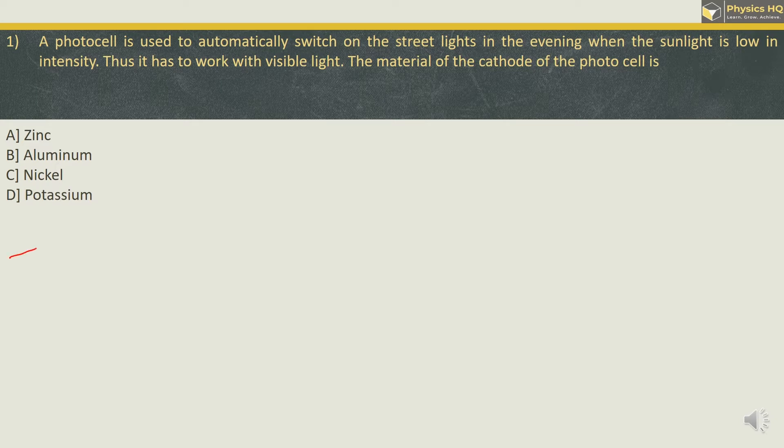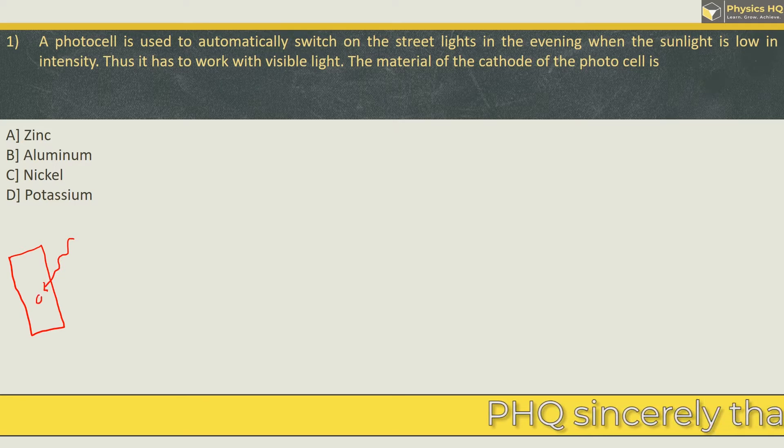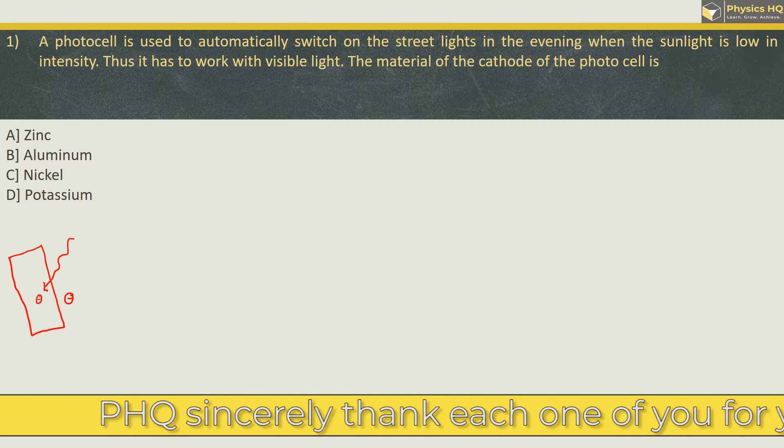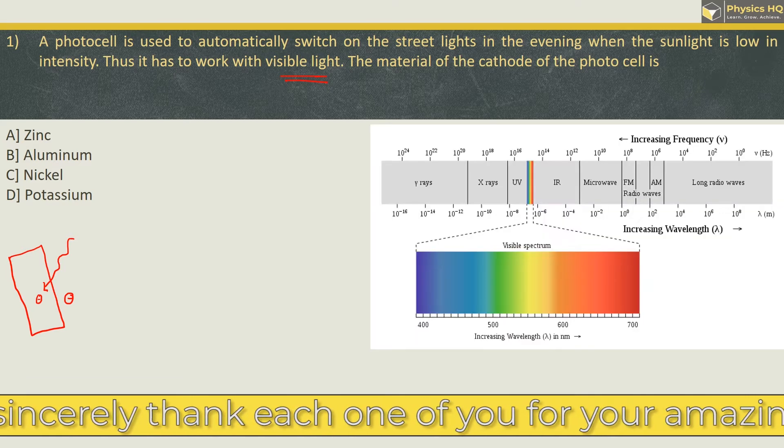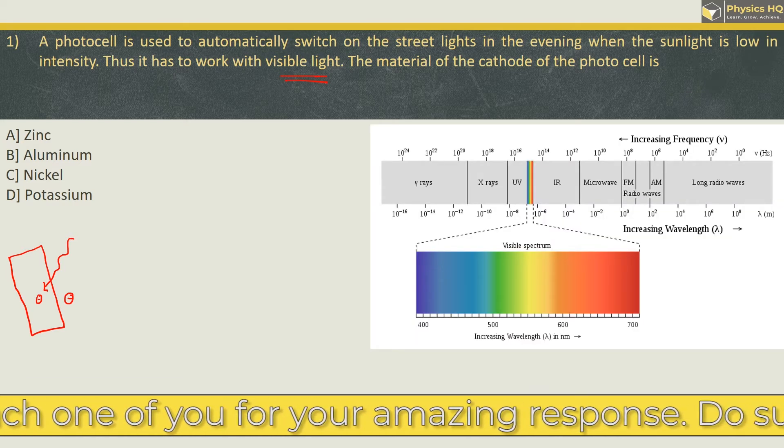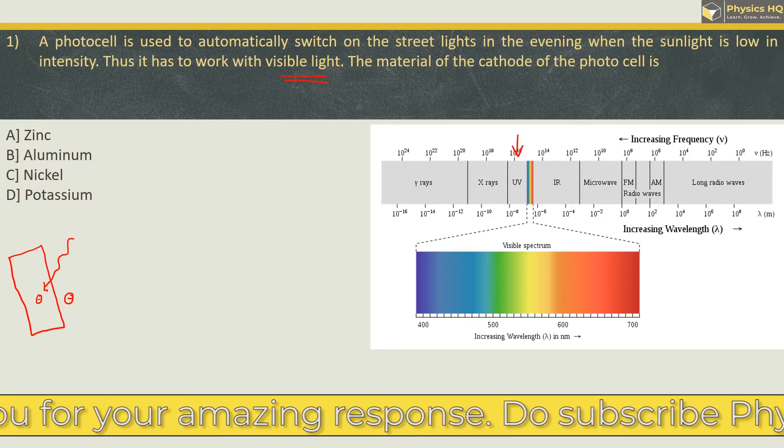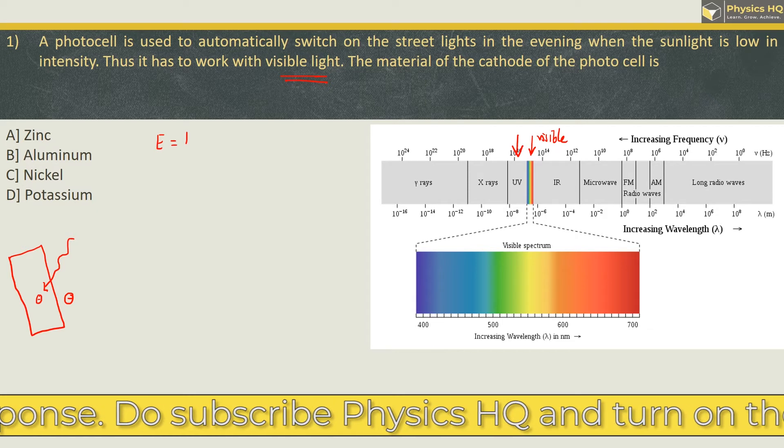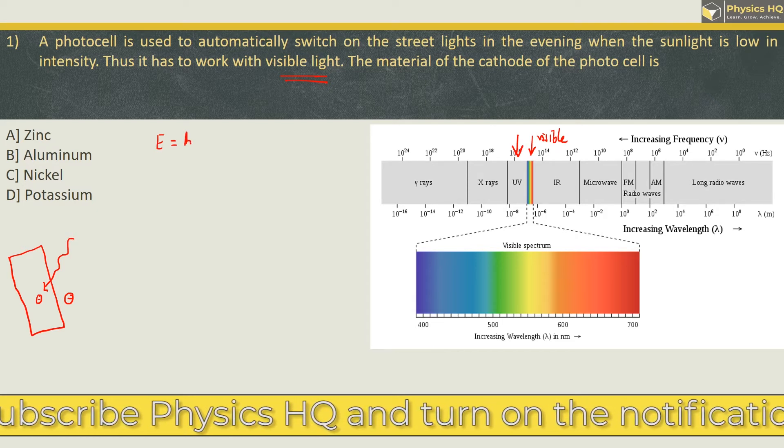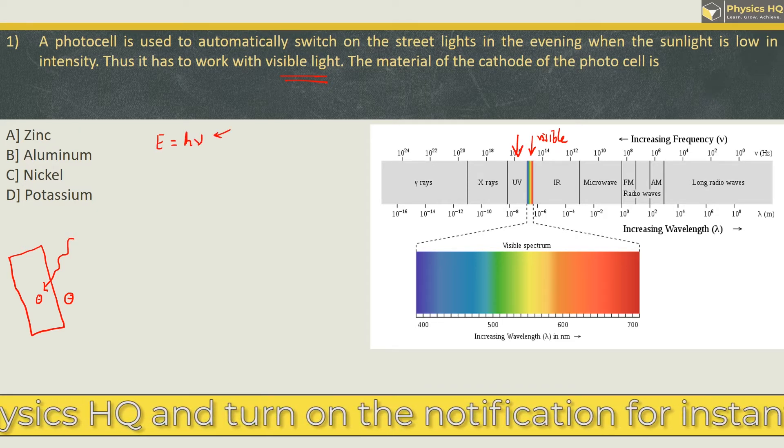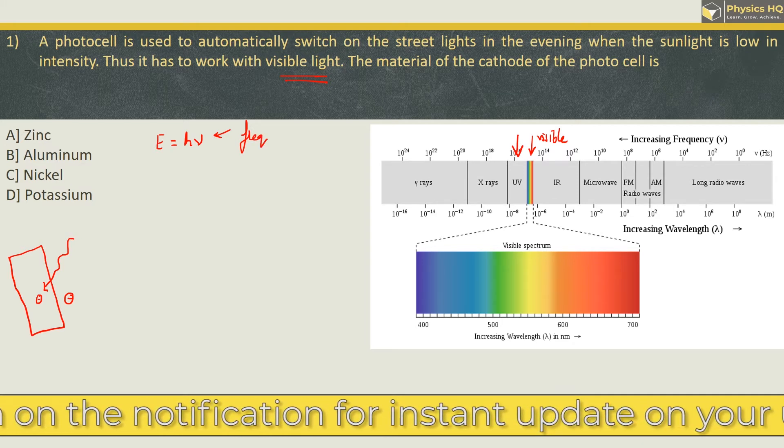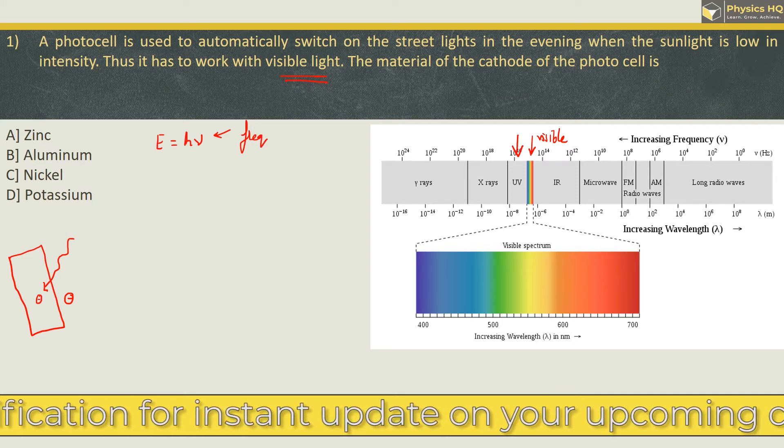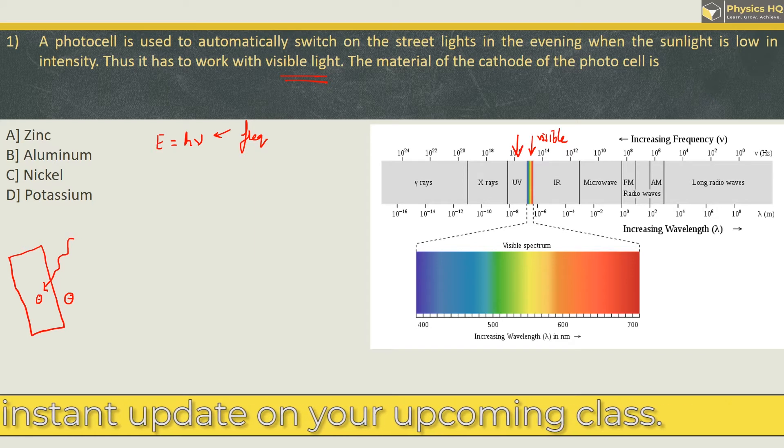Now in the case of photoelectric effect, whenever an ultraviolet ray falls on a metal, the electrons from the surface of the metals are emitted out. But in our case, we are supposed to use visible light. As you can see from this frequency spectrum, the frequency of ultraviolet ray is greater than the frequency of visible light. Energy that is provided by photons is given by h nu, where nu is frequency. So if higher is the frequency, higher will be the energy given.